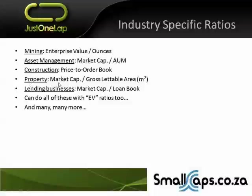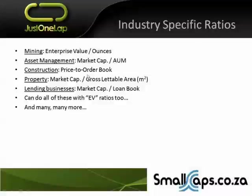In the property market, you can take market cap divided by gross lettable area. If you're a property company, what are you selling? You're selling space. The more space you have, the more you can earn from it. Take your market cap and divide it by gross lettable area. Once again, gross lettable area can differ from company to company — you'd rent out a factory for a lot less than a hotel. Just make sure they have similar property portfolios or work around the differences.